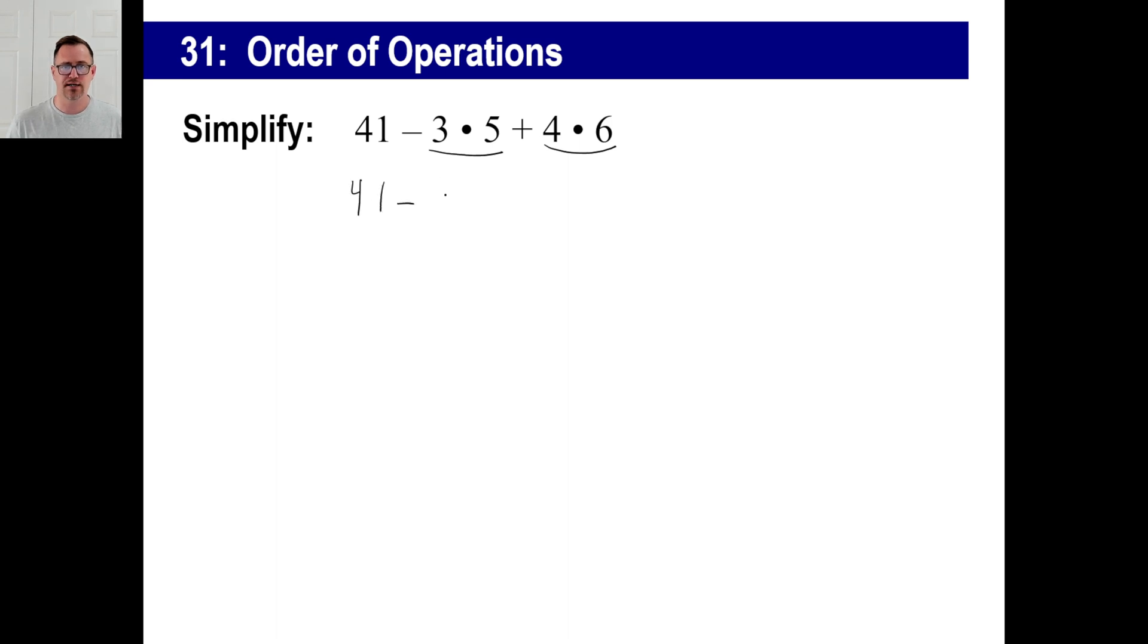So I'd write 41 - 3 × 5 + 4 × 6. And 41 - 15 is 26 + 24. That's 50. There we go.